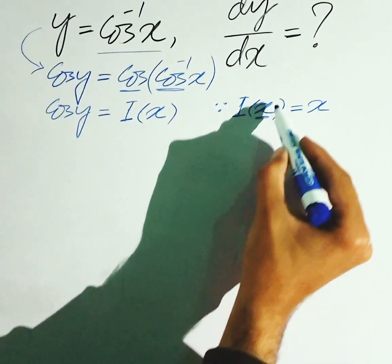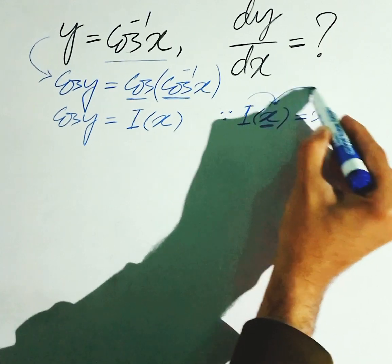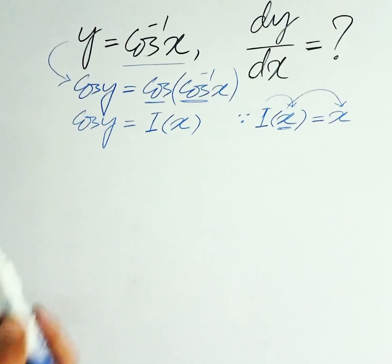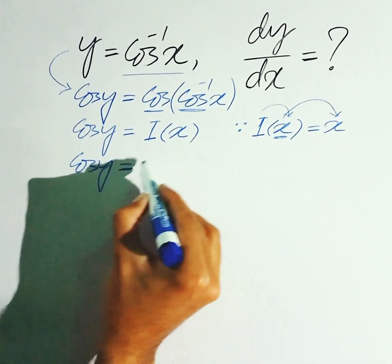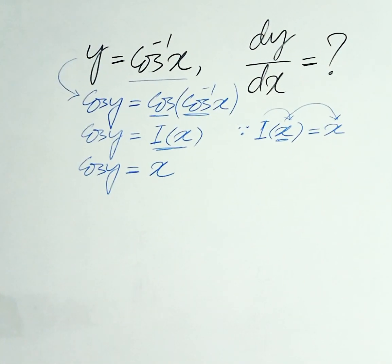Ya aapko input hai, to ya function is ke oper operate kerega aur aapko again x hi daega. Yahan se bane ga cos y is equal to i of x ki jaga, x i jaga. Is it clear?